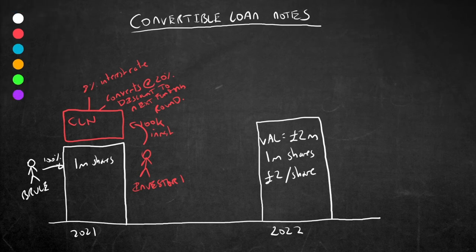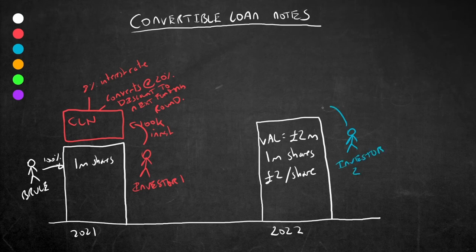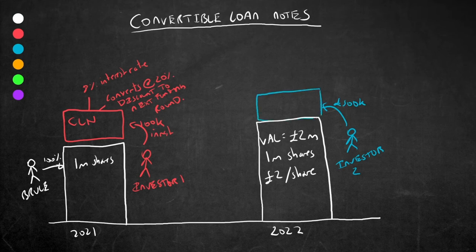He is successful in attracting another investor. Let's call this investor 2, who invests 500,000 at 2 pounds a share, which gives this new investor 250,000 shares.